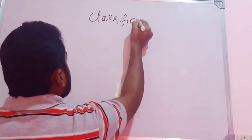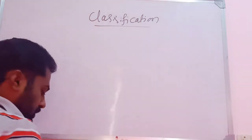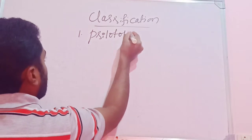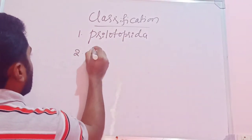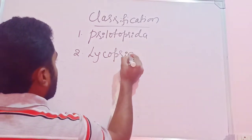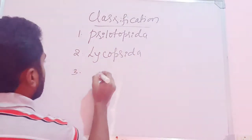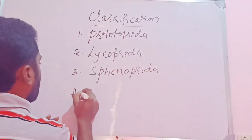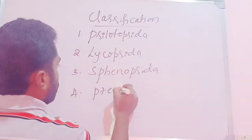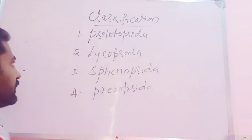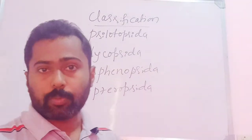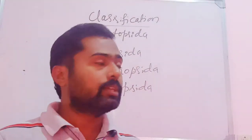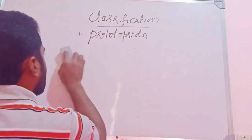Pteridophytes are majorly classified into four divisions: Psilotopsida, Lycopsida, Sphenopsida, and Pteropsida.